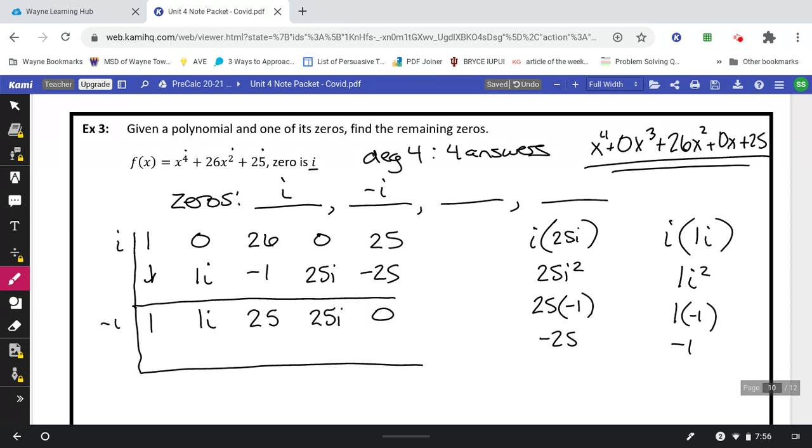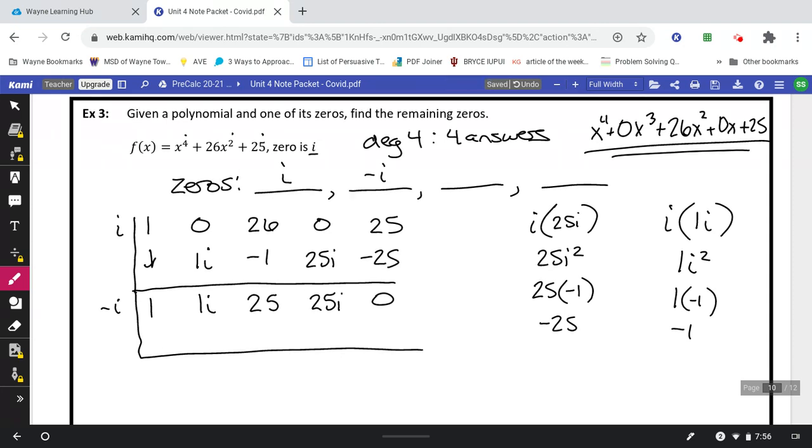Do that same thing with a negative i. Bring down the 1. Multiply negative i times 1 to get negative 1i. Notice the cancellation. 0 times anything is 0. 25 plus 0 is 25. Negative i times 25, negative 25i cancels out to make 0. 0 times negative i is 0, and add those together to get 0.